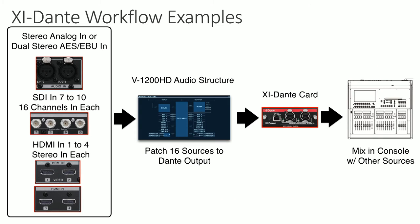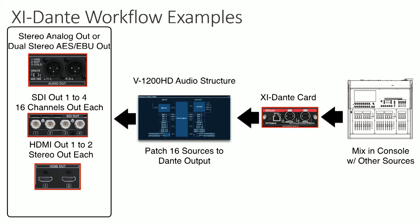In the XI Dante workflow, you have AES-EBU or stereo analog ins, plus SDI and HDMI inputs all going into the V1200 audio structure. You can patch 16 sources to the Dante output and send those directly over the Dante network to your live audio console. This is great for de-embedding audio from an HDMI or SDI signal without needing a separate de-embedder or embedder. We hear constantly that video engineers say the audio from the audio console doesn't work — well, you can send audio channels separately over the Dante network into the V1200 for a separate broadcast or web stream mix.